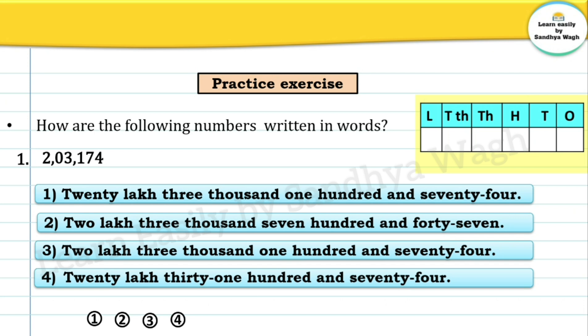The first digit is two, so we write two in the lakhs place. Then we have zero, which goes in the ten thousands place. Then three goes in the thousands place. Then one goes in the hundreds place. Seven is in the tens place and four is in the ones or units place.